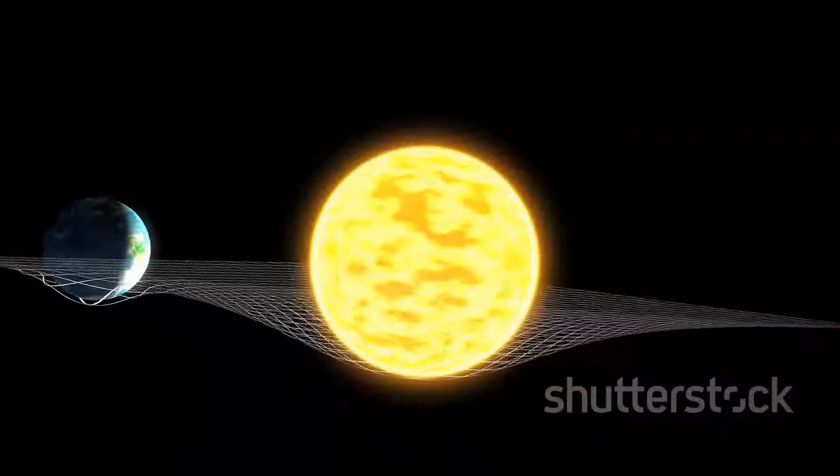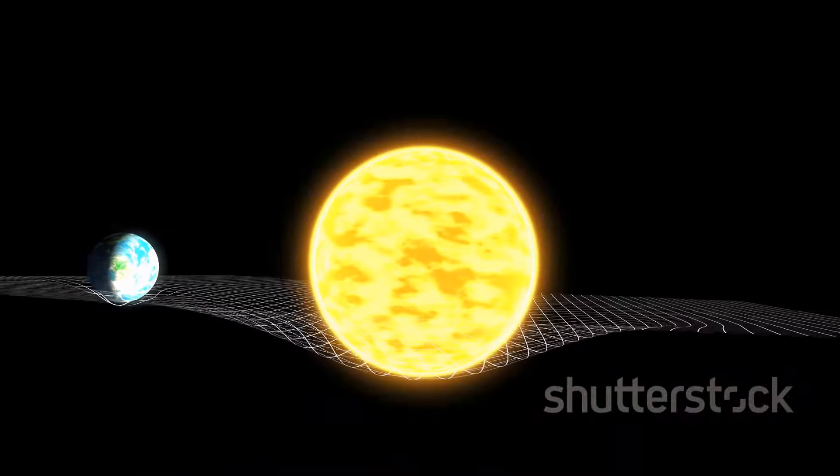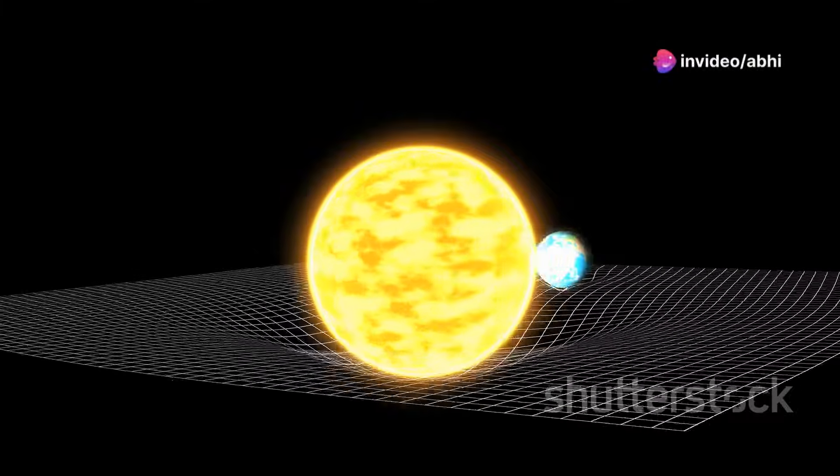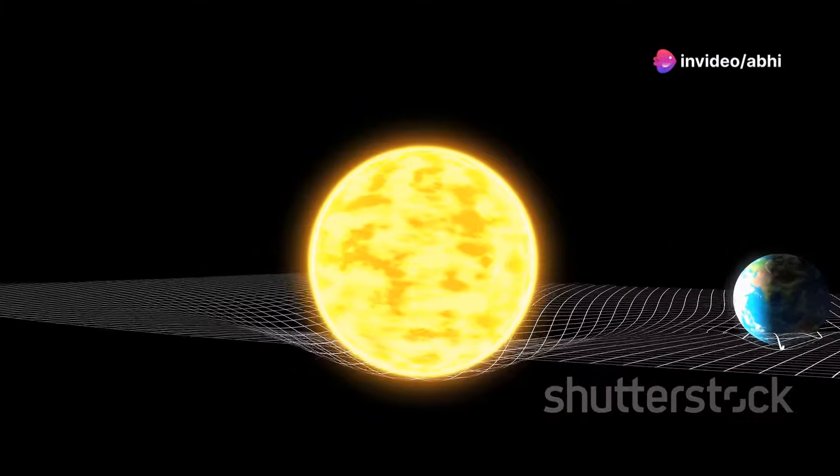Einstein proposed that mass and energy have a profound impact on this cosmic ocean. They distort space-time, much like a weighty ball would deform a rubber sheet if placed upon it. Picture a bowling ball on a trampoline, creating a distortion and curvature in the otherwise flat fabric. This is a visual representation of how mass manipulates space-time.